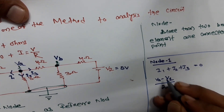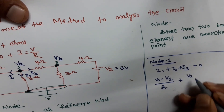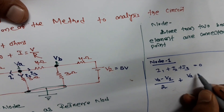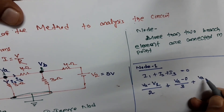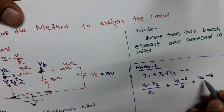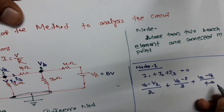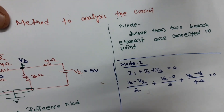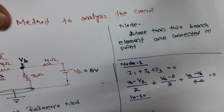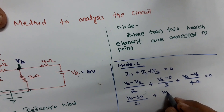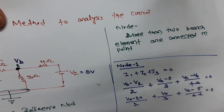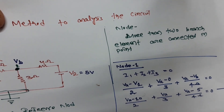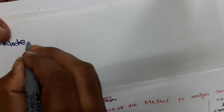Then plus Va minus reference (ground is 0), so Va minus 0 divided by 3 ohm, then plus Va minus Vb divided by 4 ohm, all equal to 0. Simplifying: (Va − 10)/2 + Va/3 + (Va − Vb)/4 = 0. This is our node 1 equation.